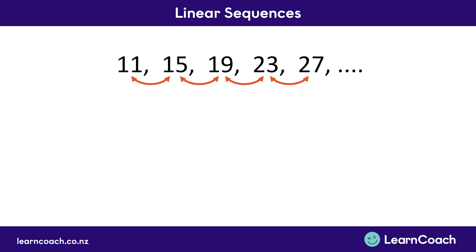A linear sequence is one that has an even difference. When we look at the difference between these numbers, we can see the difference between 11 and 15 is 4. The difference between 15 and 19 is also 4, same with 19 and 23, and 23 and 27. This is the first step whenever you see a sequence — look at what the difference is between each number, because if you know the difference, we know how to write an equation for that sequence.